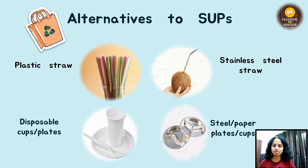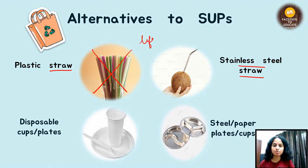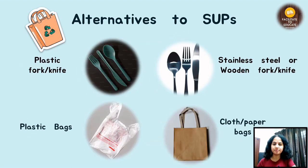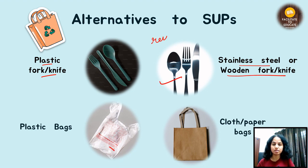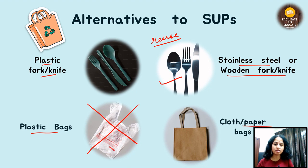What are the alternatives? First, you can use stainless steel straws instead of plastic straws. Next, for disposable cups and plates, you can use steel or paper plates. For plastic forks and knives, you can use stainless steel or wooden forks and knives which you can reuse. And plastic bags are a big no — in their place, you can use cloth or paper bags.